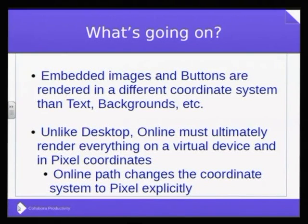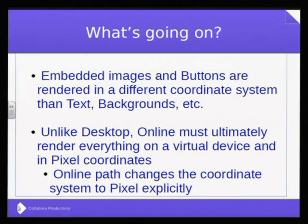So what is the problem? The problem is that when you're rendering, you're actually rendering in layers. You do the background first, then you draw the cell boundaries — that grid — then the cell backgrounds like those yellow merged cells, then the text, and then the buttons and images. So you have a layered approach. And these rendering implementations each have their own coordinate system.